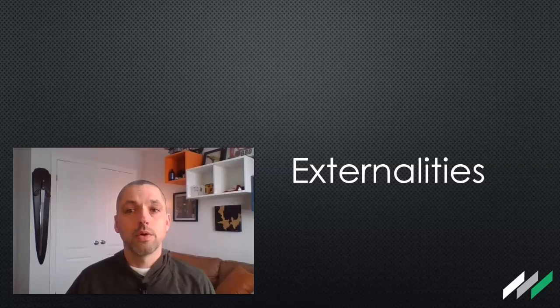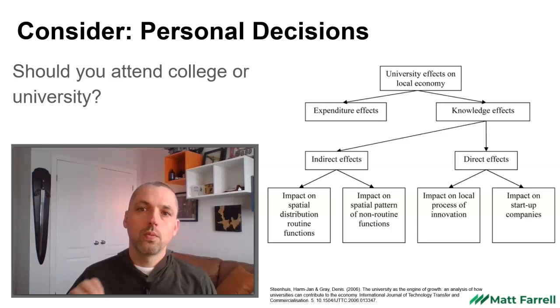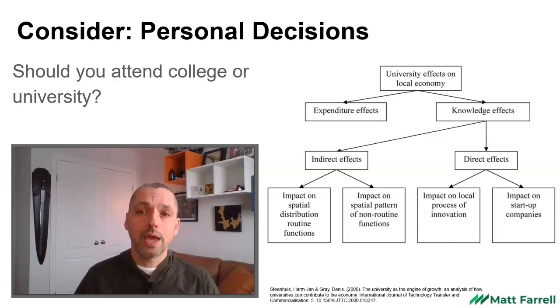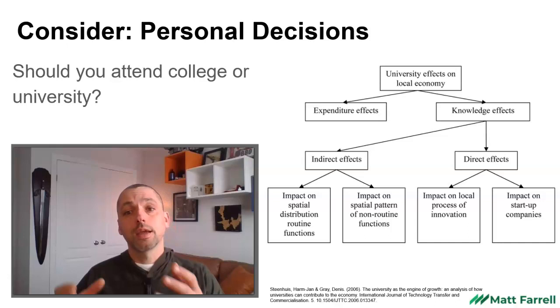In this video, we're going to talk about externalities. Now, we all make different personal decisions. For example, the decision to attend college or university. That individual decision can actually have a positive impact on the community. Colleges and universities contribute a lot to the local economy, and they can also be connectors for people who might choose to start businesses.